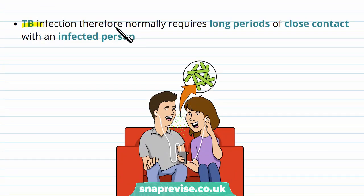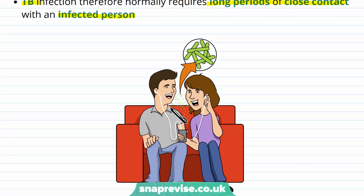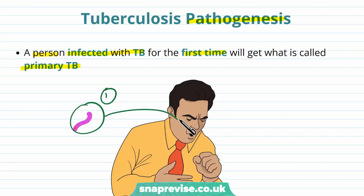TB normally occurs as an infection after long periods of close contact with someone who has the infection, because spending lots of time with that person means there will be lots of droplets in the air, increasing the risk of bacteria entering the airways. A person who's been infected with TB for the first time will get what we call primary TB — the first time the bacterium enters the human host, this will cause primary TB.